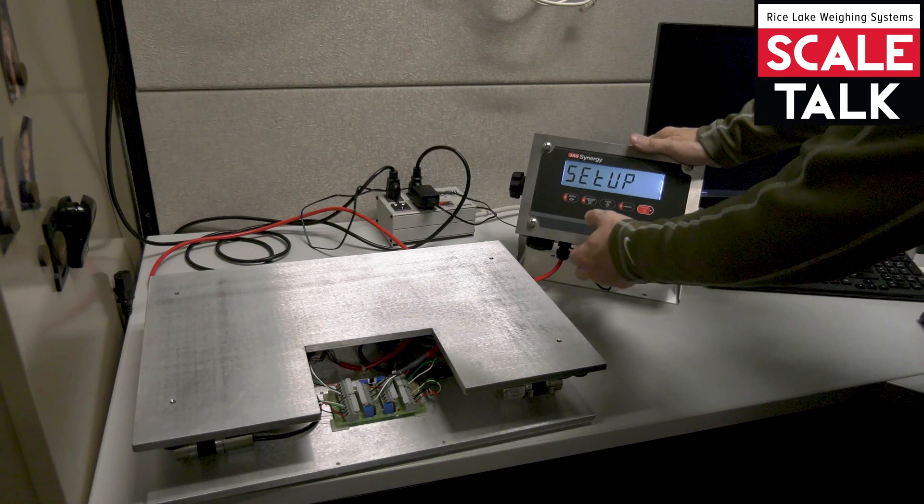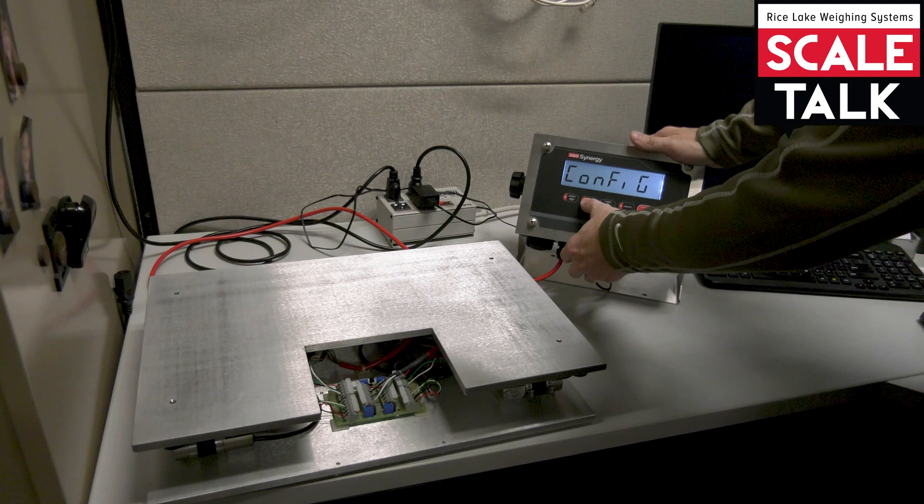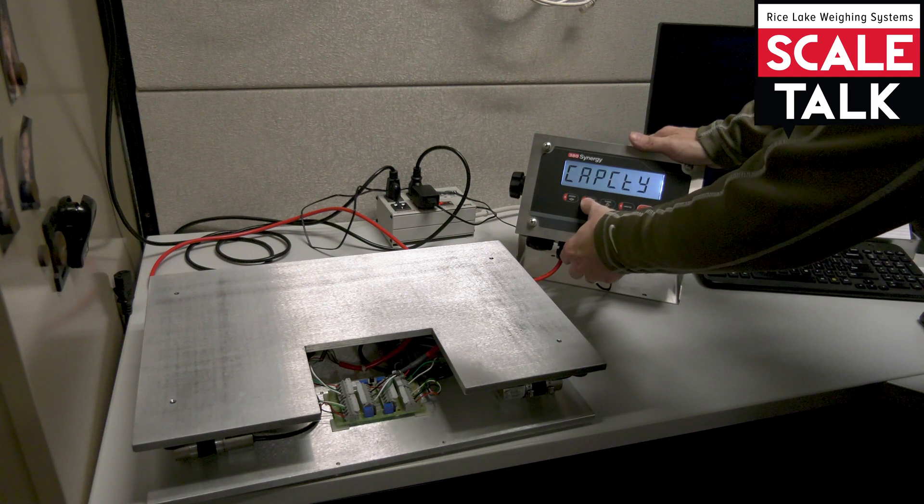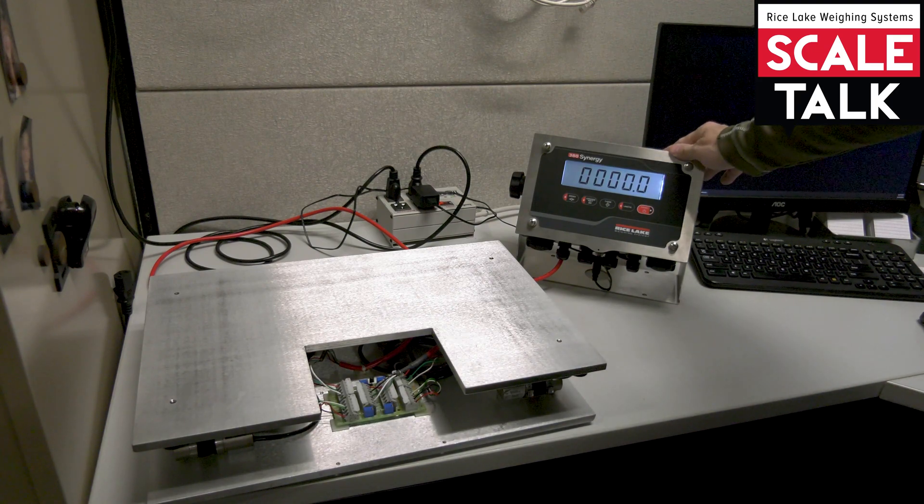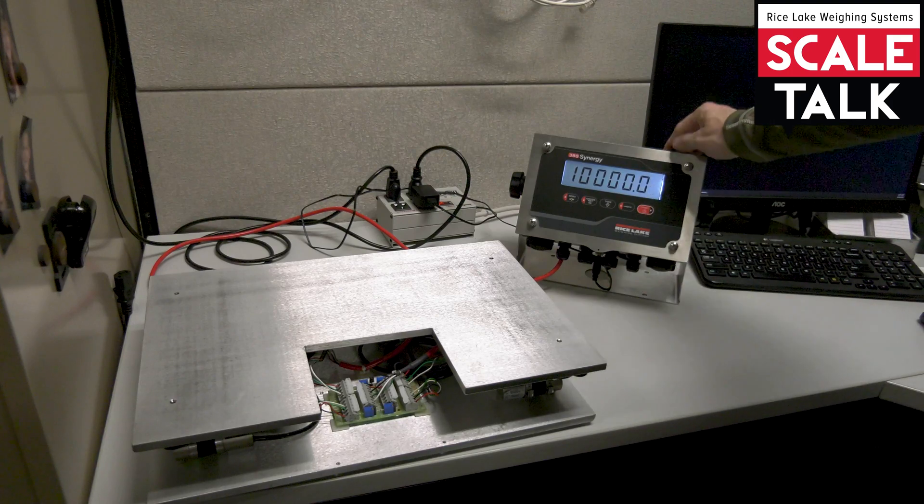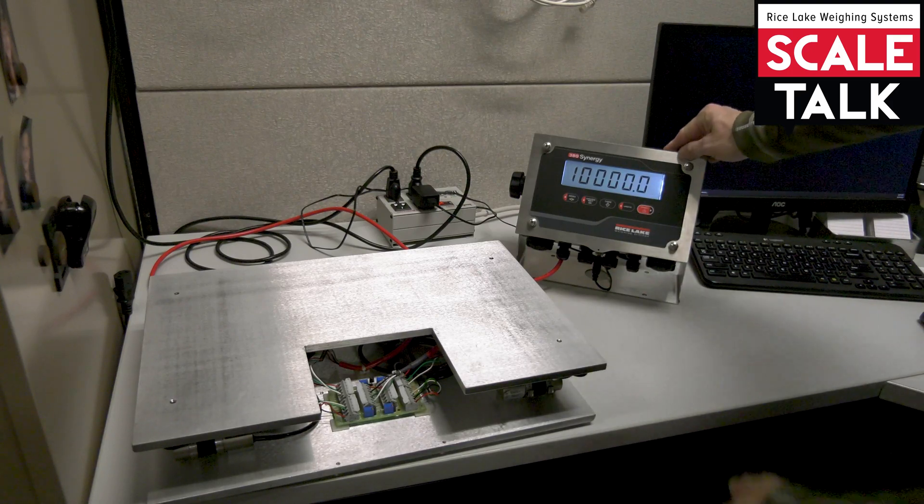From here I'm going to navigate down to config, down to capacity, and down a third time where I see the default value of 10,000. Remember we wanted to make this a 50 pound scale, so we're going to make the adjustment here for the capacity.